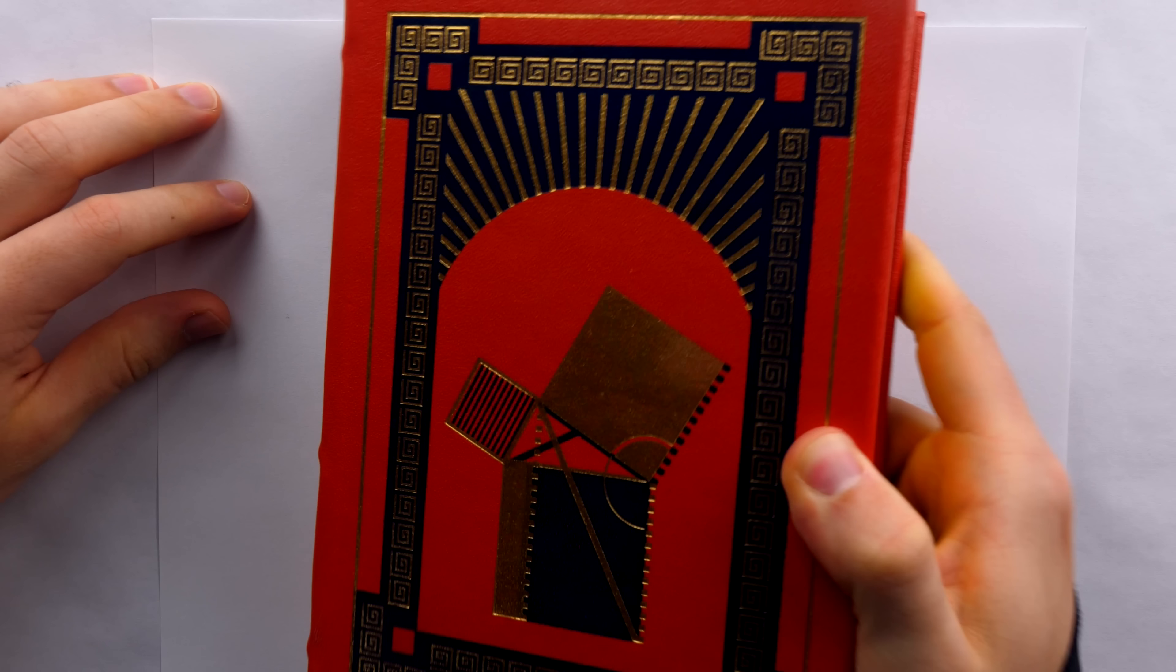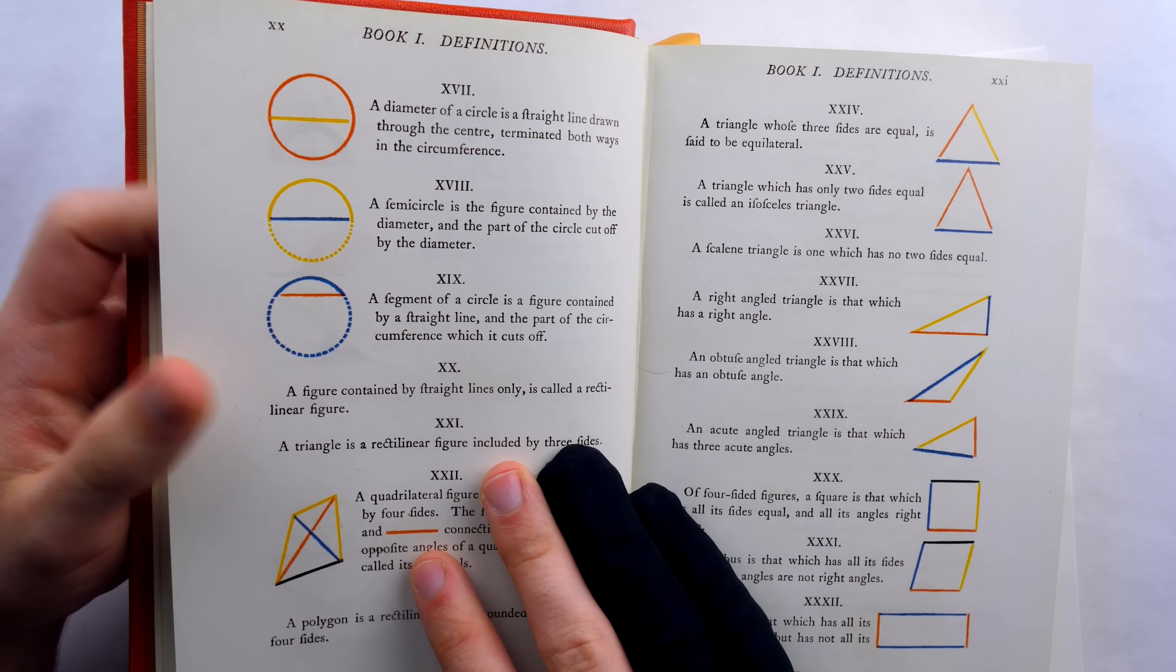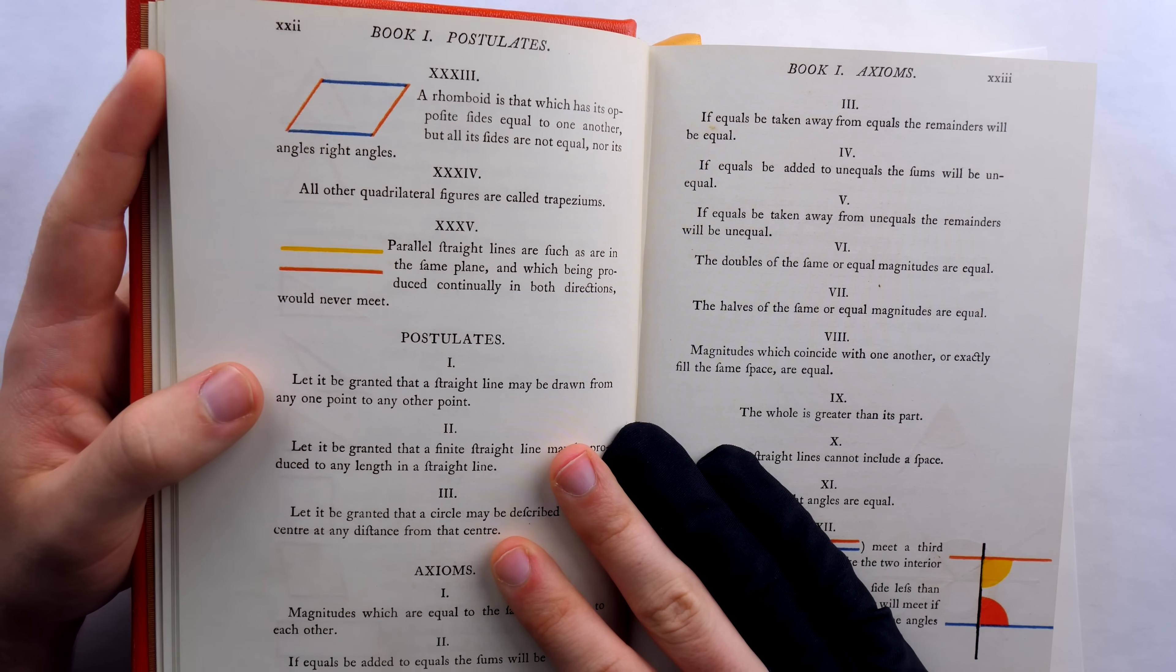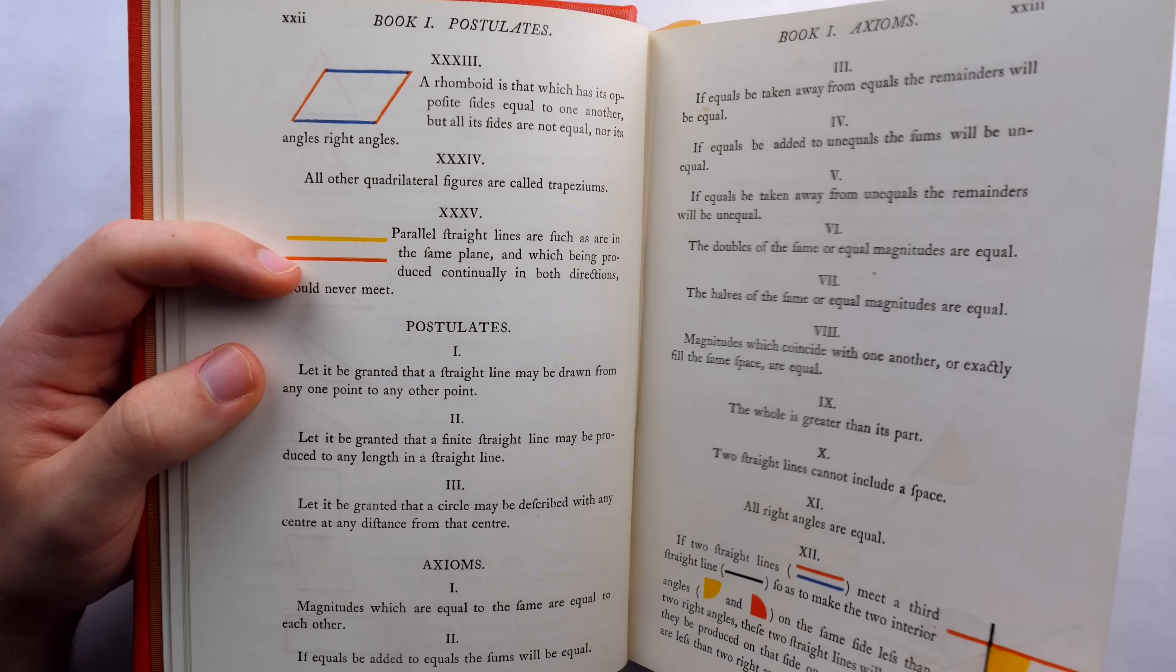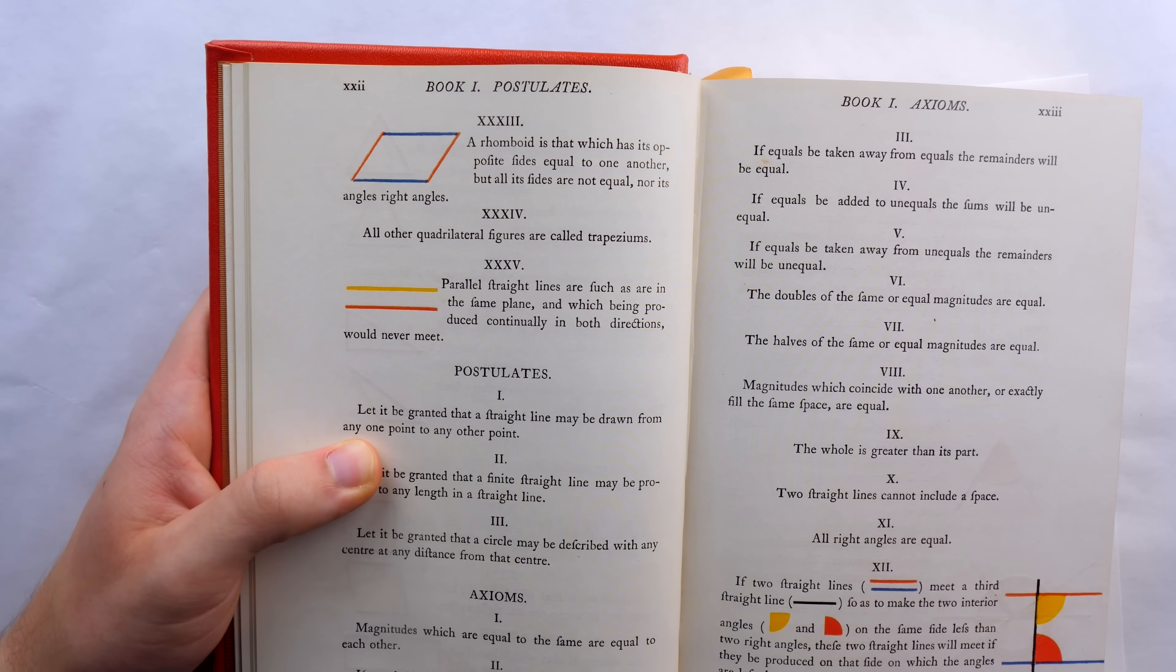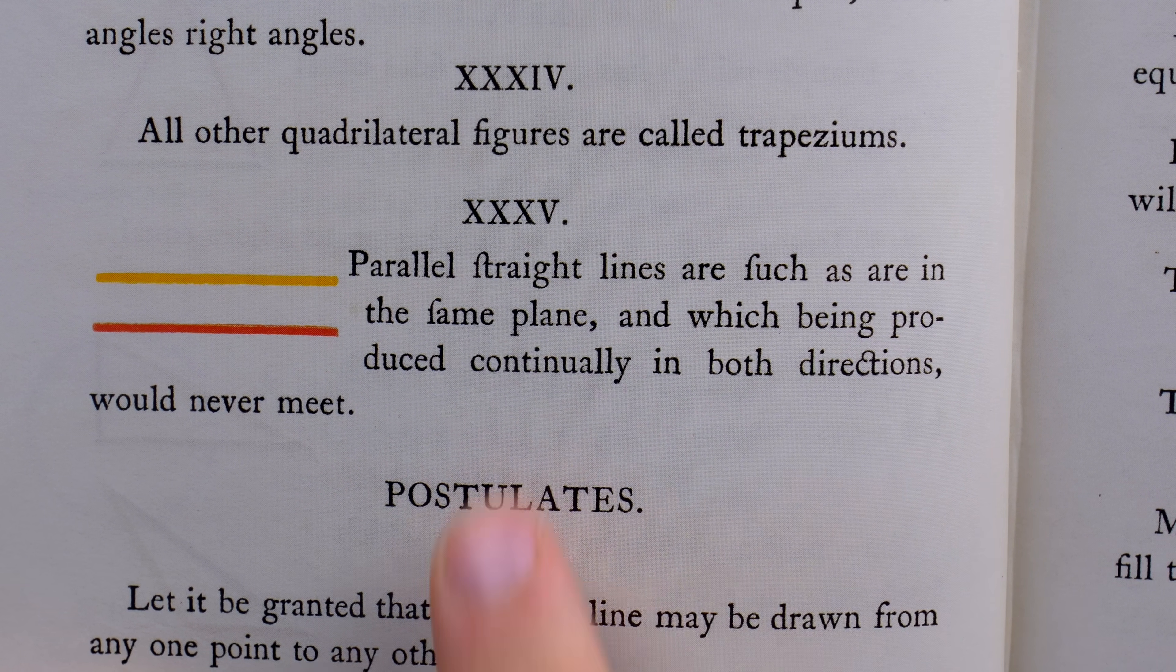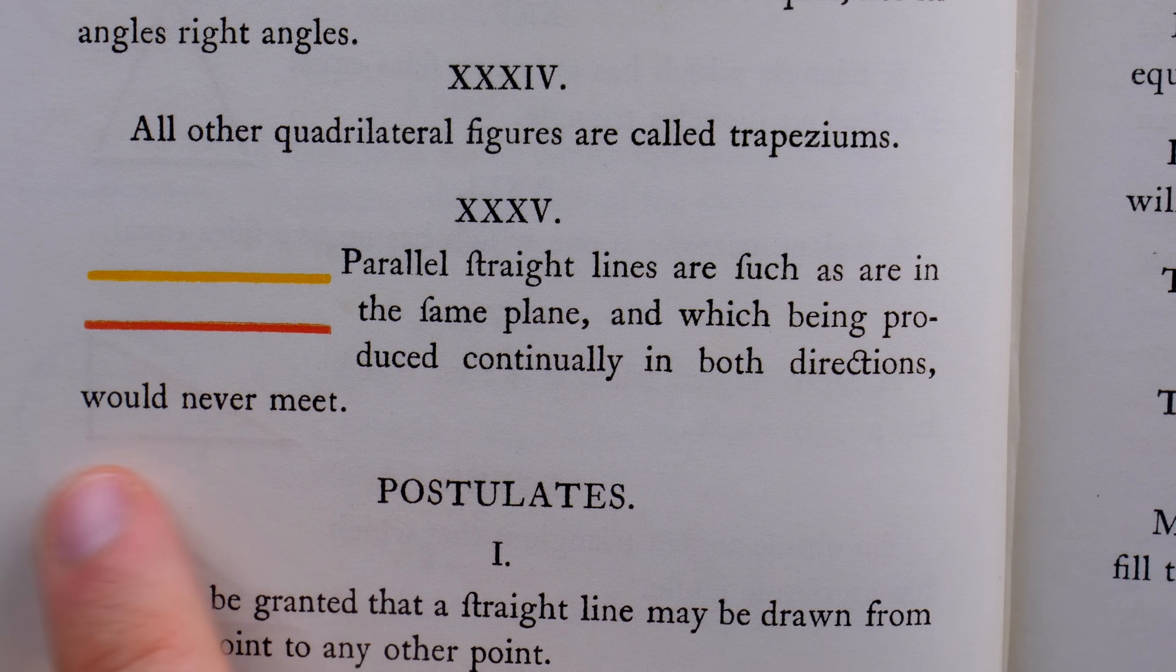In his legendary textbook, The Elements, Euclid set a standard for deductive mathematics. Here in book one, we begin with definitions and axioms. In essence, it's these axioms that fully specify the Euclidean geometry, and from these assumptions, Euclid deduces many, many classic theorems. In these definitions and axioms for Euclidean geometry, we can see a few interesting things. First, definition 35 tells us what parallel lines are. They're lines that are in the same plane, and which being produced continually in both directions, would never meet.